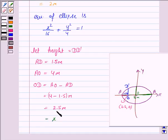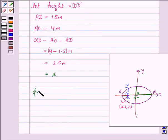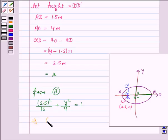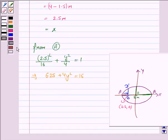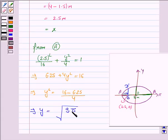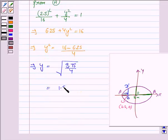So x is equal to 2.5. Now we put x is equal to 2.5 in this and we will get the value of y. So we have 2.5 square upon 16 plus y square upon 4 is equal to 1. Simplifying this, we get 6.25 plus 4y square is equal to 16, and this implies y square is equal to 16 minus 6.25 upon 4. And this implies y is equal to square root of 9.75 upon 4, which is equal to 1.56 approximately.